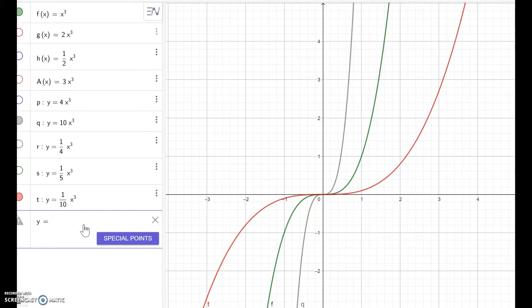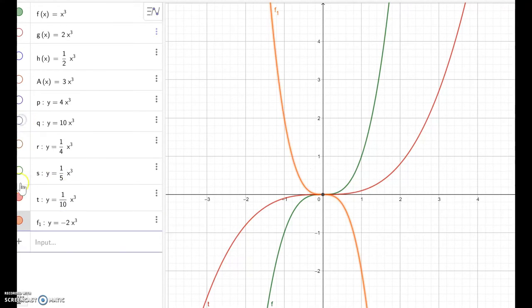So let me make any negative coefficient, such as y equal to negative 2 x to the cubic. So I am going to turn off everything else. So you can see better. So this is the x cube and this is the negative 2 x cube.